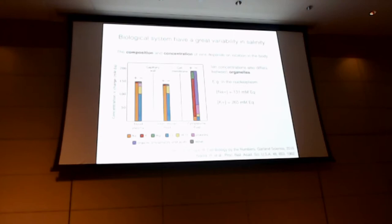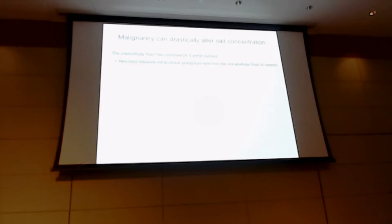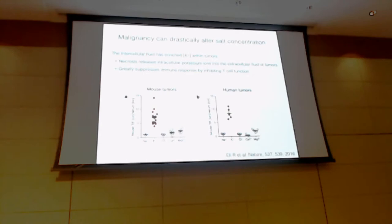And malignancy also can change salt conditions. So tumors are well known to alter pH, but they also alter the ion concentrations. In tumors, if you look at the extracellular fluid around tumors, there's an enrichment of potassium ions. And this is because necrosis causes cells to spew out their intracellular potassium to the extracellular fluid. And this has an effect that it actually suppresses the immune response. And this plot shows, it's from this paper from 2016, showing that in mouse and human tumors, the potassium concentrations are greatly elevated with respect to serum levels.